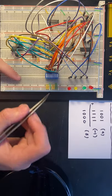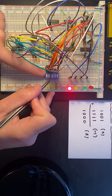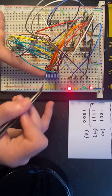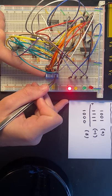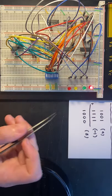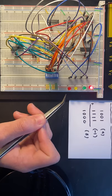Let's say our first number is nine, so we set 1001. That's nine plus negative one, which is 1111. As you can see, we got a result of 1000, which is eight.